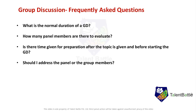Should I address the panel or the group members? Never make the mistake of addressing panel members. The group discussion is between you and the other group members, not the evaluators. You must even avoid looking at the panel members when the GD is in progress — make sure you are looking at your group members only. How many members are there in a group discussion? Ideally ten members, but if the company has less time they may put 12 to 15 members in one group, making it more difficult to differentiate yourself.